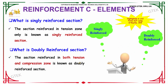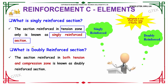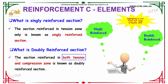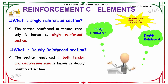What is a singly reinforced section? A section reinforced in the tension zone only is known as a singly reinforced section. Whereas a doubly reinforced section is a section reinforced in both the tension and compression zones. So in a singly reinforced section you have the tension zone alone, whereas in a doubly reinforced section you have both tension and compression zones.